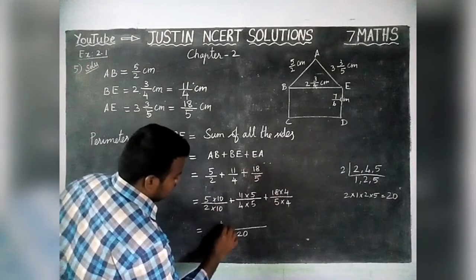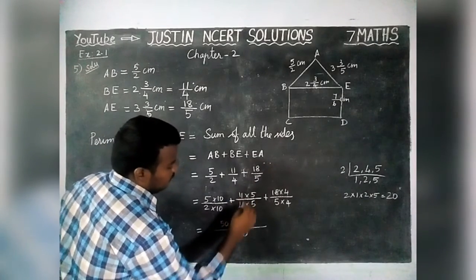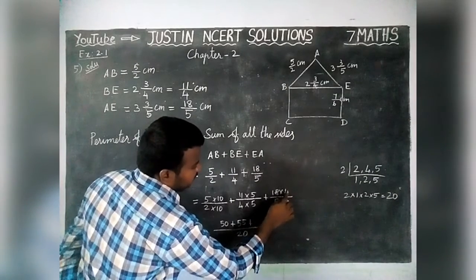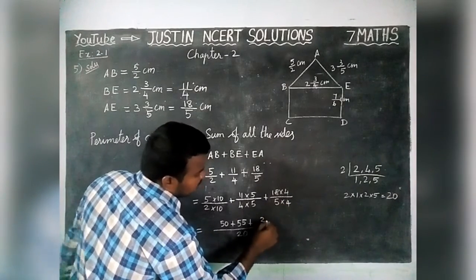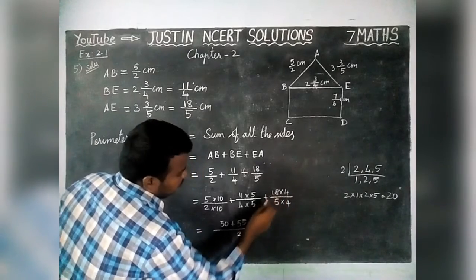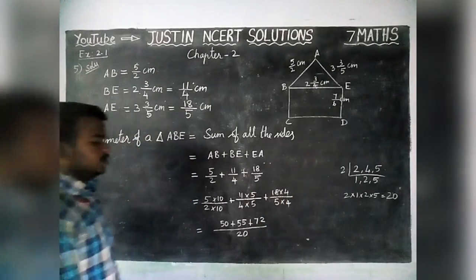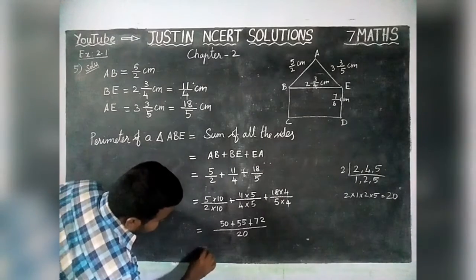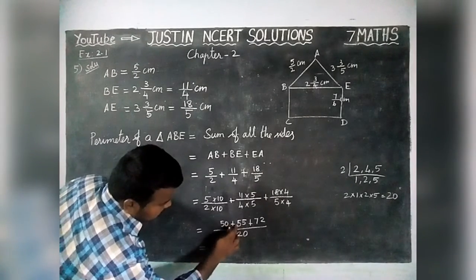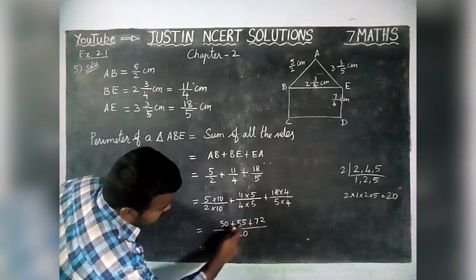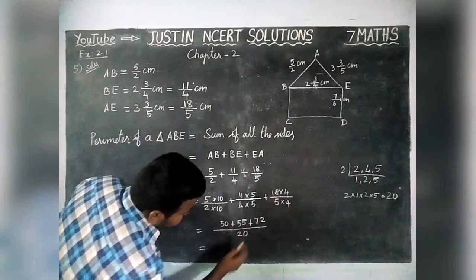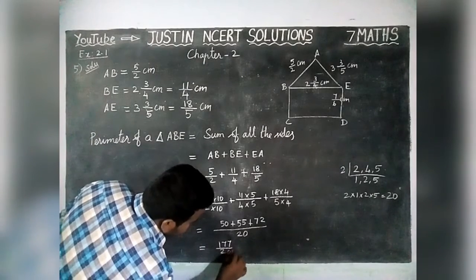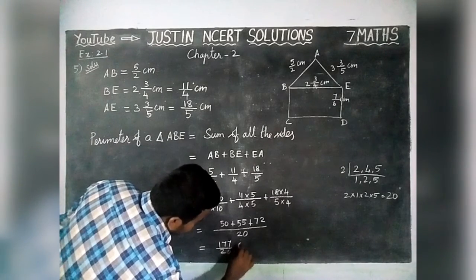With denominator 20: 5 × 10 = 50, plus 11 × 5 = 55, plus 18 × 4 = 72. Adding the numerators: 50 + 55 = 105, and 105 + 72 = 177. So the perimeter is 177/20 centimetre.